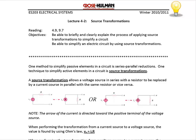Today we will start Lecture 4-2 on Source Transformations. Source transformations is a technique to simplify a circuit in order to find voltage, current, or power in that circuit. It's similar to how we use series and parallel reductions to simplify resistors, inductors, and capacitors.